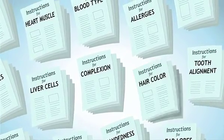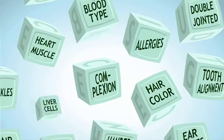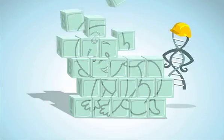This includes heart muscle, hair color, liver cells, skin and more, ultimately resulting in a bouncing baby girl or boy.